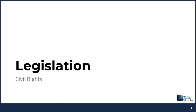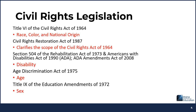The first topic we will be covering today is civil rights legislation. Title VI of the Civil Rights Act of 1964 added protections for race, color, and national origin. The Civil Rights Restoration Act of 1987 clarified the scope of the Civil Rights Act of 1964. Section 504 of the Rehabilitation Act of 1973 and the Americans with Disabilities Act of 1990 and the ADA Amendments Act of 2008 added protections for disability. The Age Discrimination Act of 1975 added protections for age, and Title IX of the Education Amendments Act of 1972 added protections for sex.